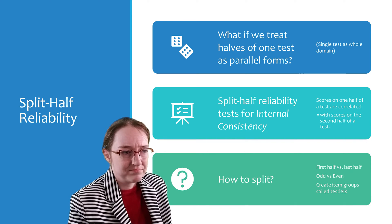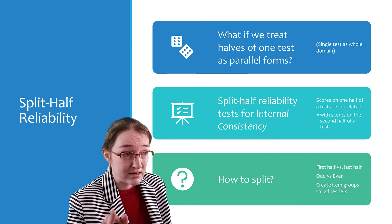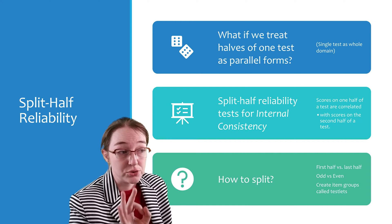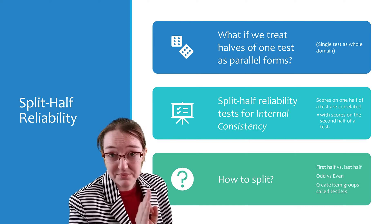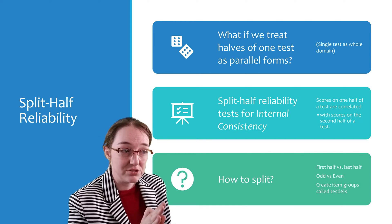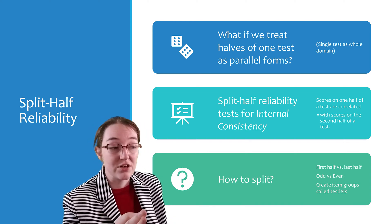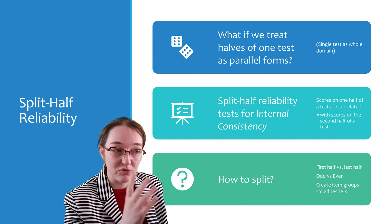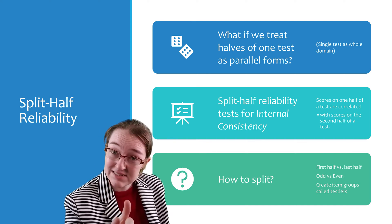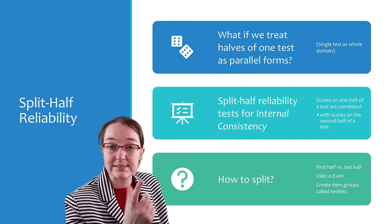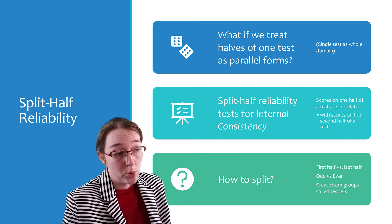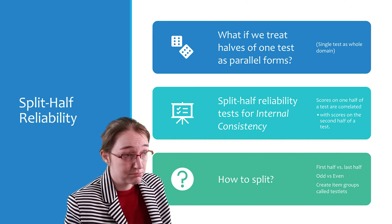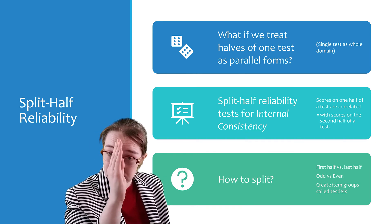Before we get there, I just want to mention that there are tons of different ways to split up the test. You can use first half, last half. You can use odd versus even. You can create item groups and call them testlets, so like subtests. Or you can do it randomly. There are tons of ways to do it. But you do the split once.